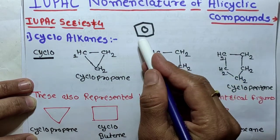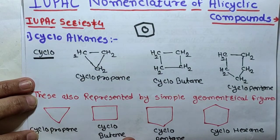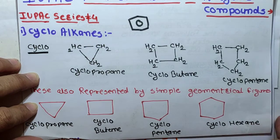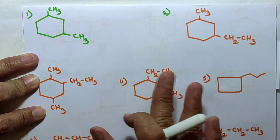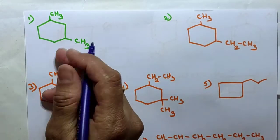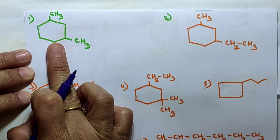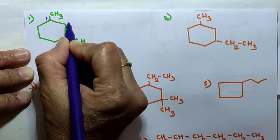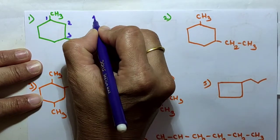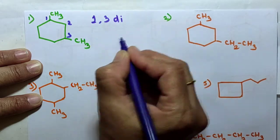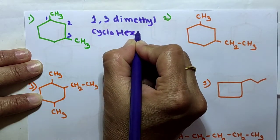The second type is aromatic compounds, which contain at least one aromatic ring similar to benzene in chemical behavior. Now let's look at alicyclic compounds. Substituted cycloalkanes are named as alkyl cycloalkanes. For example, take cyclohexane with two methyl substituents attached. We start numbering the carbons in the ring — since there are two methyl groups, this is a dimethyl cyclohexane.